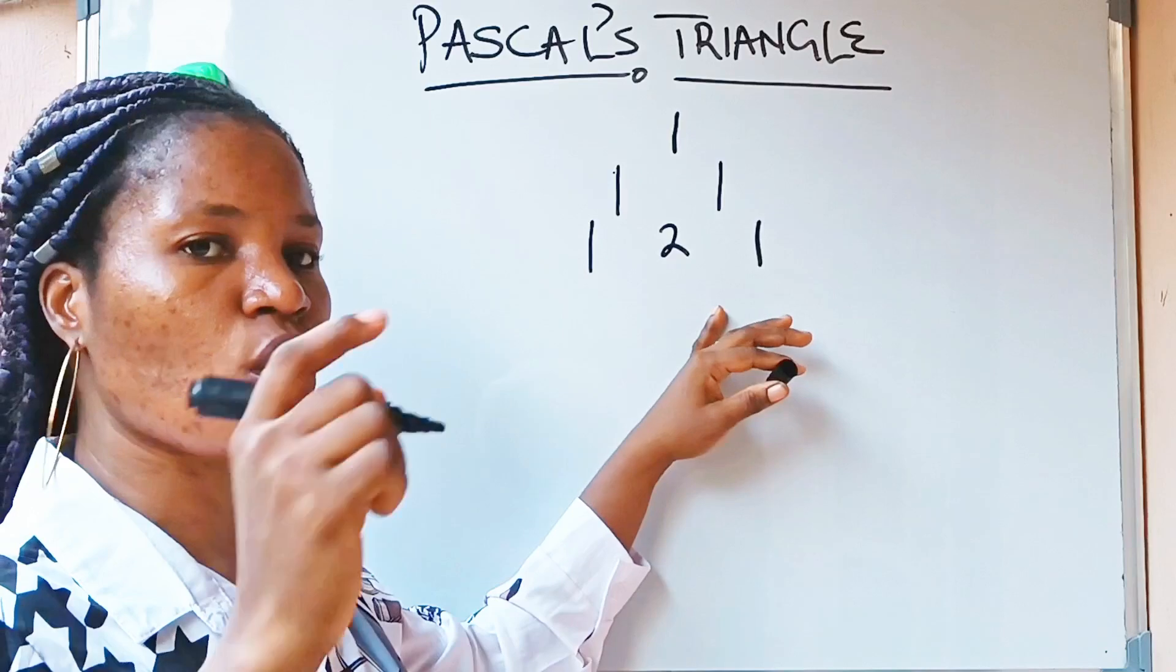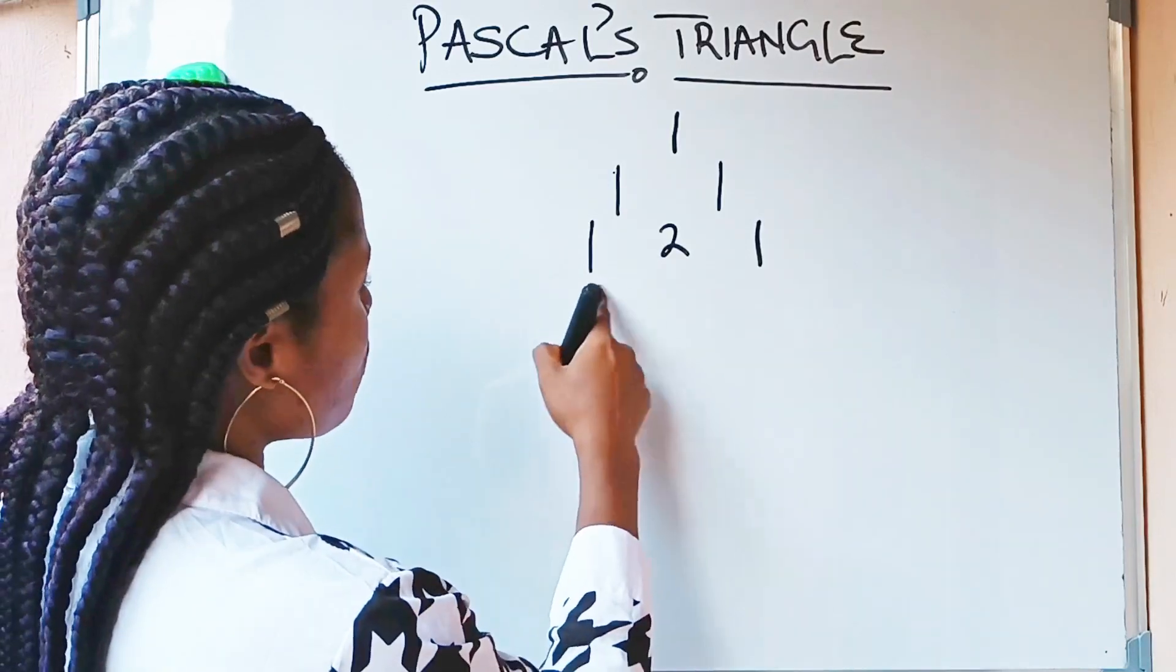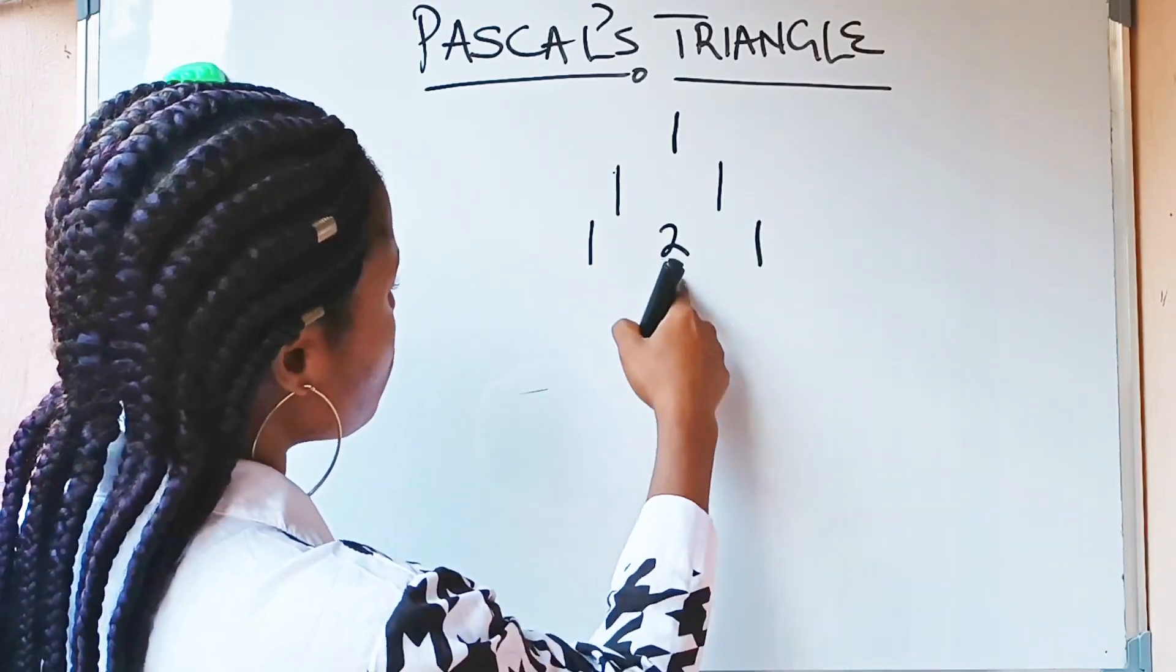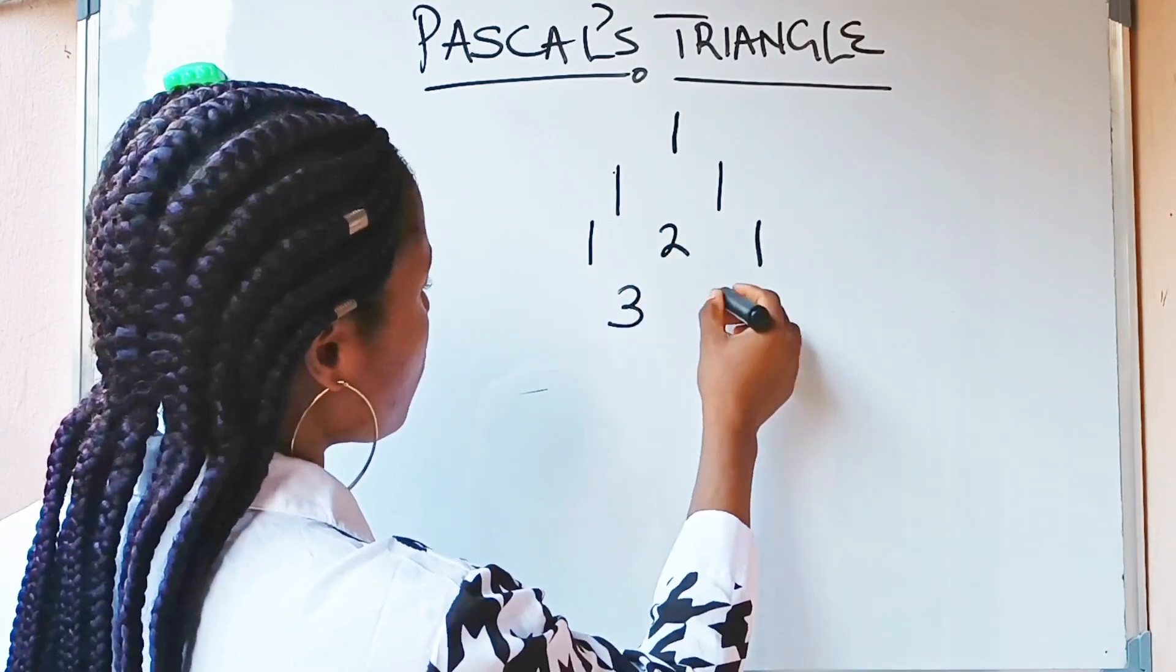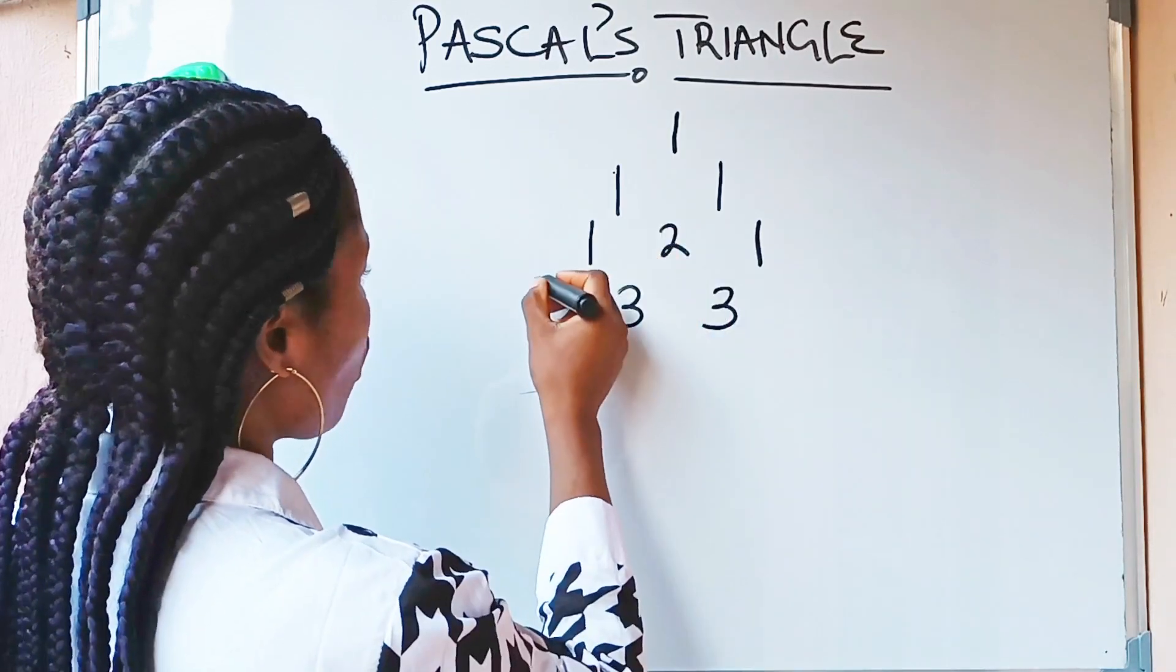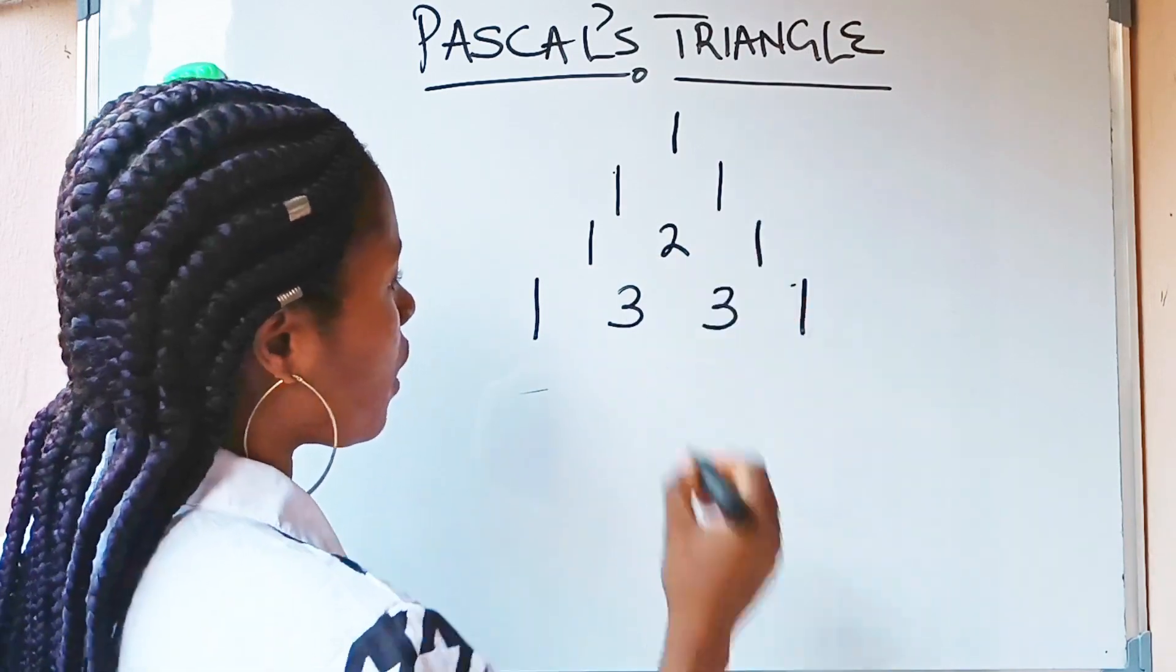So, having done that, we are going to go into the next row. I am going to do it again. 1 plus 2, it will give you 3. 2 plus 1, it will give you 3. You complete it with 1 and 1 again.